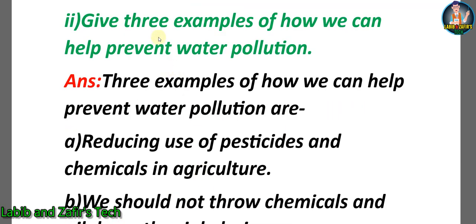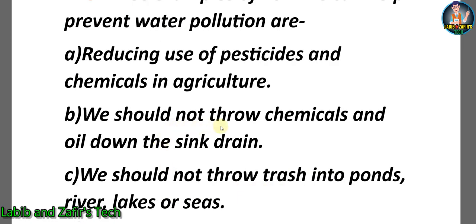Second question: Give three examples of how we can help prevent water pollution. Answer: Three examples are — A) Reducing use of pesticides and chemicals in agriculture; B) We should not throw chemicals and oil down the sink drain; C) We should not throw trash into ponds, rivers, lakes, or seas.